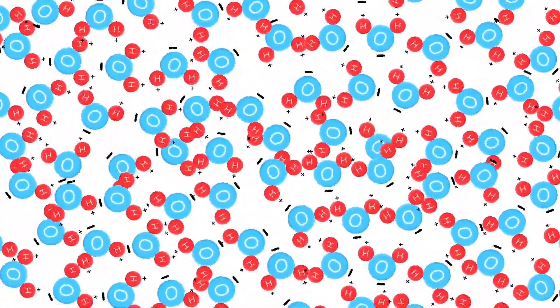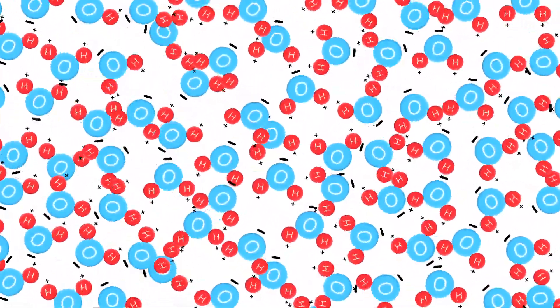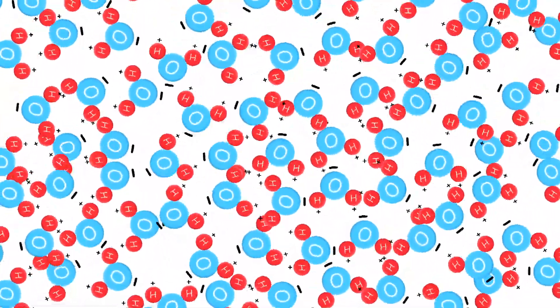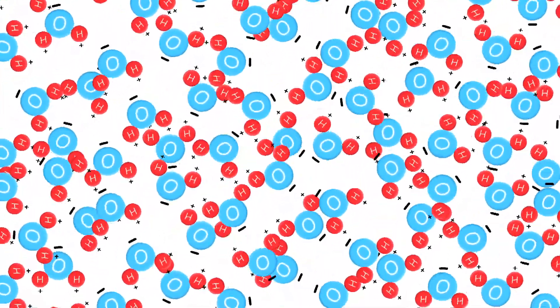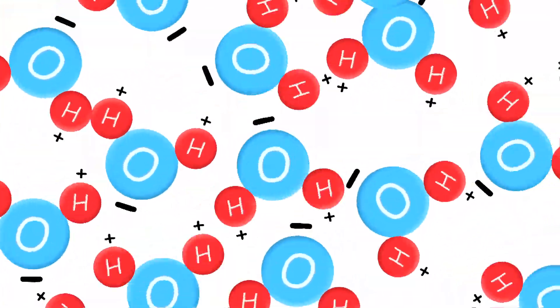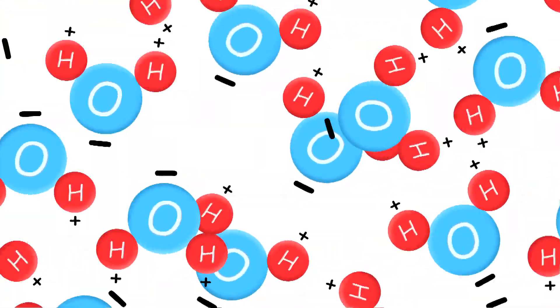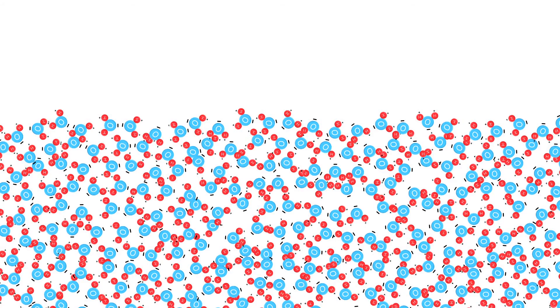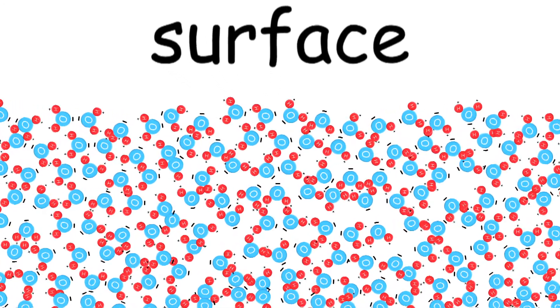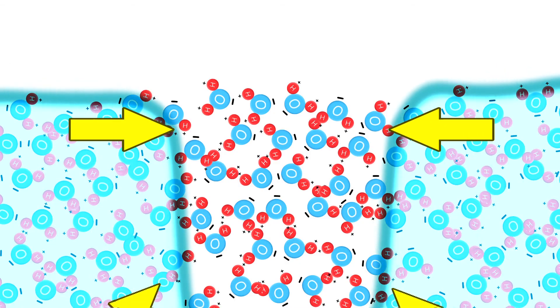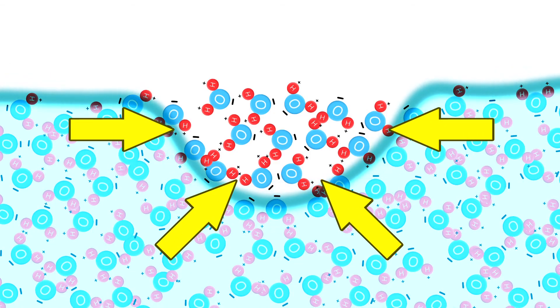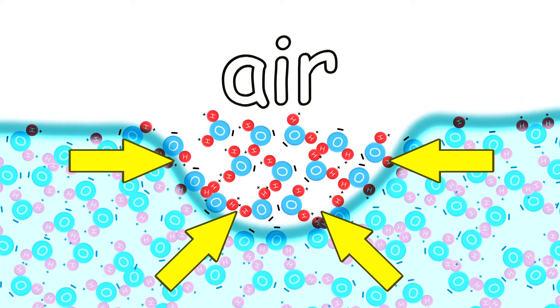If you could observe water at the molecular level, here's what you'd see. Huge masses of tiny H2O molecules sticking close together — a kind of hyperactive, hyper-exclusive clique, held closely together by their mutual and continuous attraction to each other. One happy, cliquish party. Except for the H2O molecules on the surface. They're surrounded by their clique at the sides and below, but not above. Those parts are exposed to the air.